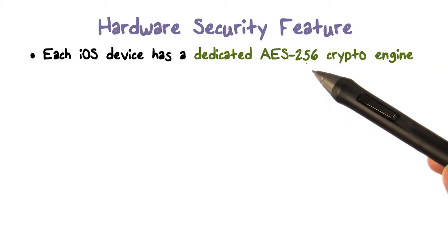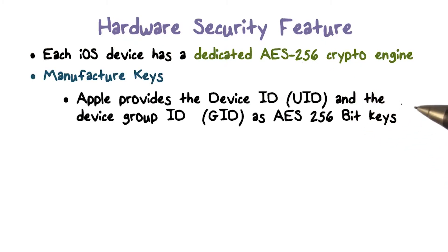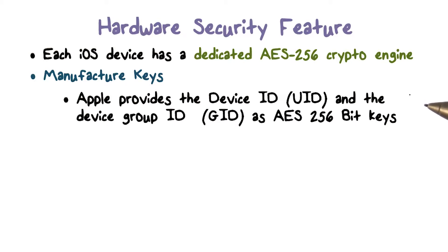AES-256 means that the key length is 256 bits. The device's unique ID, or UID, and the device group ID, or GID, are AES-256 bit keys fused or compiled into the application processor and secure enclave during manufacturing. This means that no software or firmware can read them directly — they can only see the results of encryption or decryption operations performed by the dedicated AES engines implemented in silicon using the UID or GID as a key. This is an important feature because the keys are stored securely in the hardware.